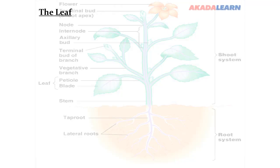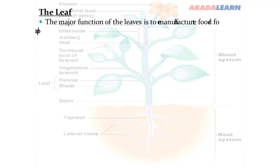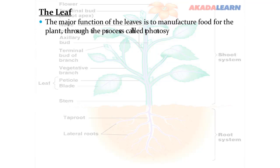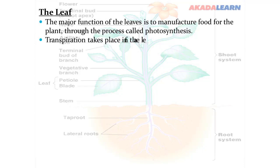The major function of the leaves is to manufacture food for the plant through the process called photosynthesis. Transpiration also takes place in the leaf. The leaf also stores plant food.